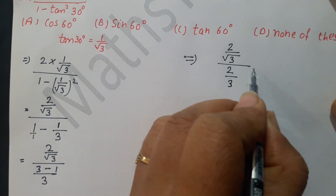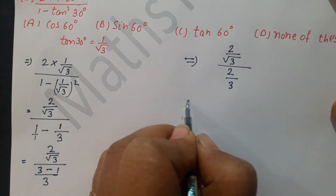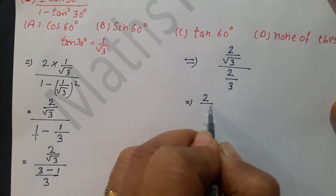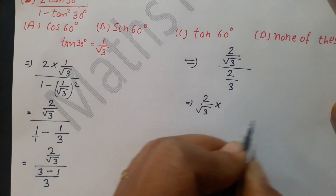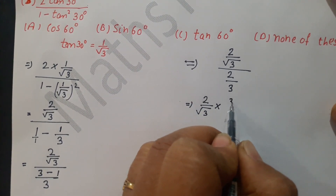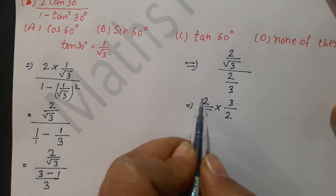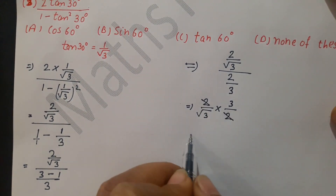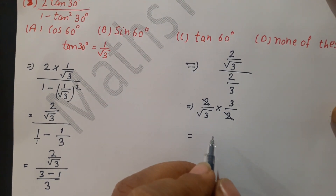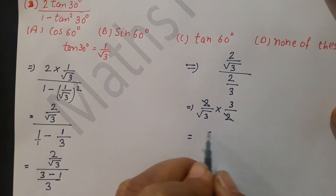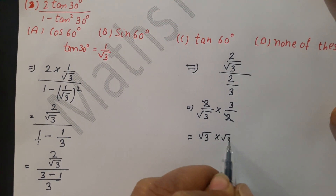To divide, we flip the denominator: (2/√3) × (3/2). The 2s cancel, leaving 3/√3. Simplifying 3/√3 = √3 × √3 / √3 = √3. So the answer is √3, which equals tan60°. Therefore the correct option is tan60°.